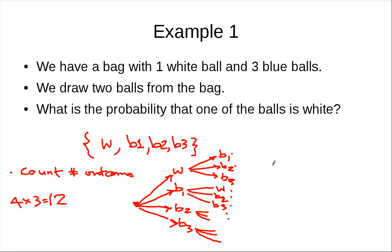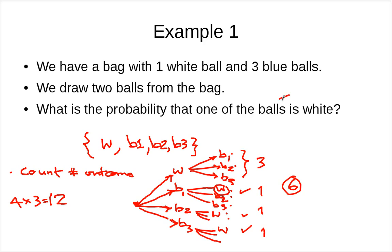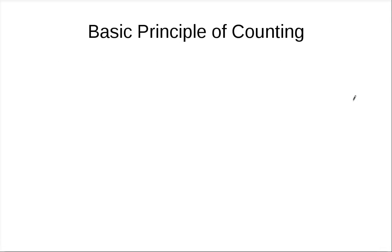How many of these outcomes contain one white ball? There are three outcomes where white is picked first, and three where white is picked second — giving us six favorable outcomes. So the probability is six over 12, which is one half. What we've done here is use the basic principle of counting.